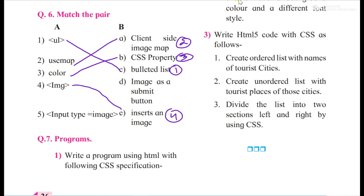Usemap is what? Client side image map. Then color is what? A CSS property, that means free will come. Image for what? To insert an image. Then input type equals image, so for this you can say D1, fifth.